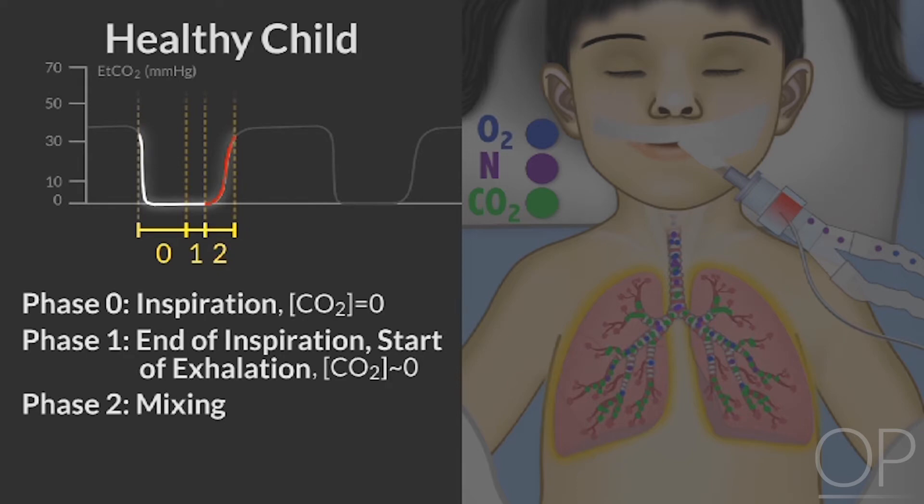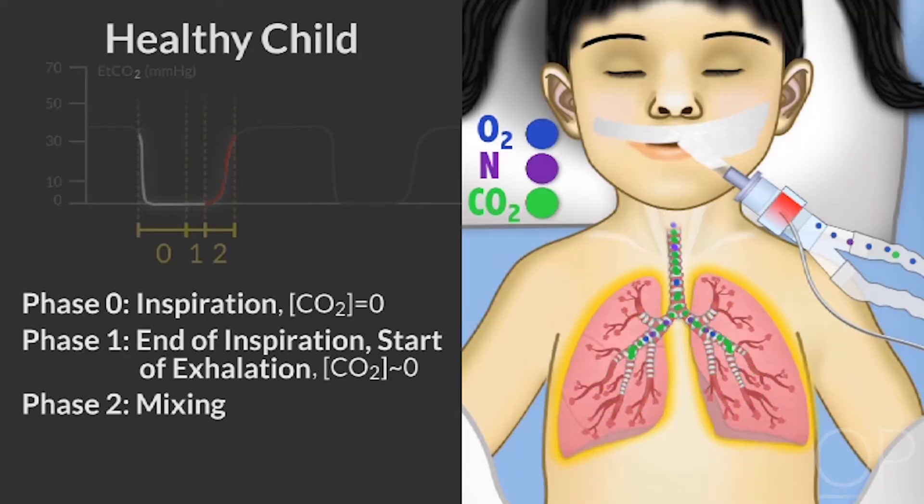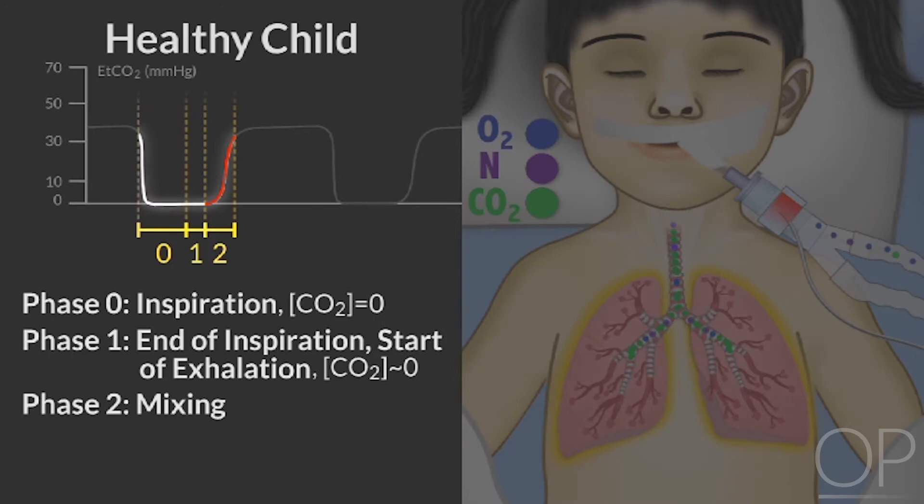Phase 2, the next phase, is sometimes referred to as the mixing phase. It contains a mixture of anatomic and alveolar dead space gas mixed with alveolar gas, which is high in CO2 concentrations. You can identify it readily on the capnogram by identifying this rapid rise in CO2 until the plateau phase.